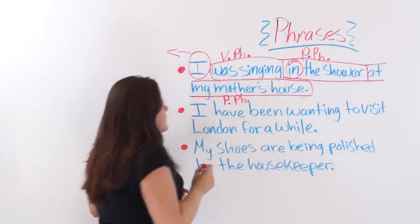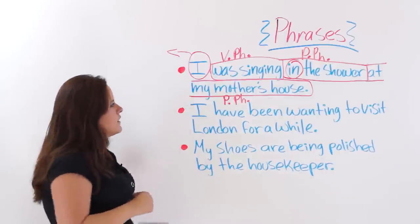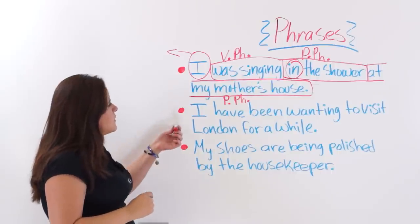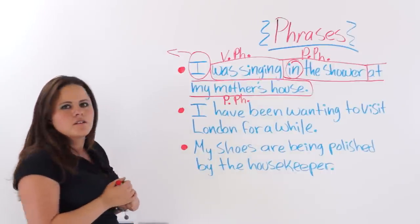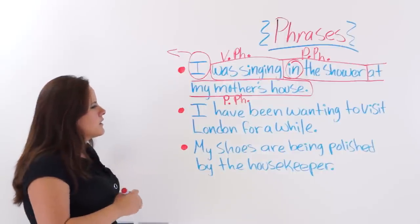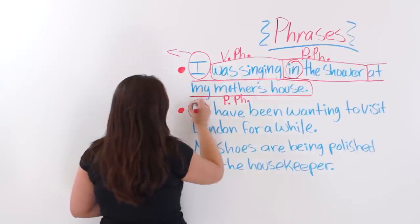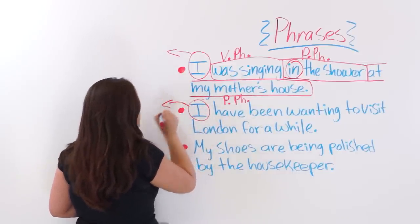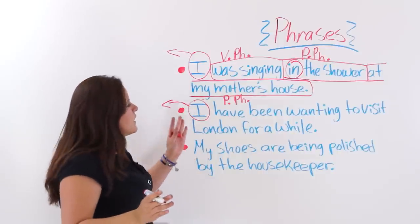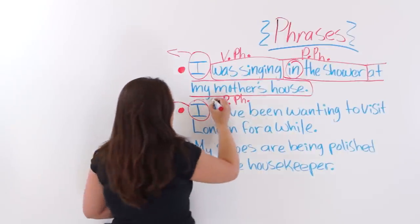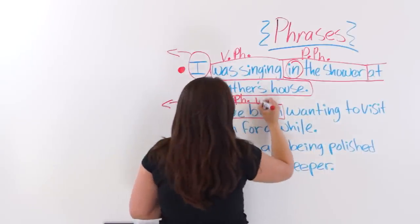You could also call 'at my mother's house' a dependent clause. The next sentence says: I have been wanting to visit London for a while. Let's take out the subject. 'Have been' is the first phrase here, and it's a verb phrase.